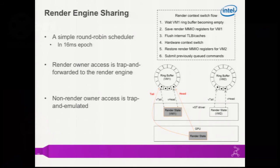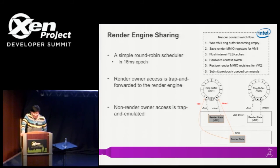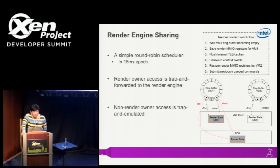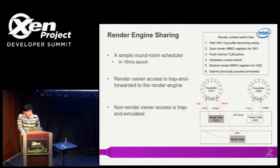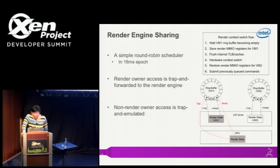For render engine sharing, the render engine is shared just like the CPU — at any given time, only one VM can be the render owner, meaning it can submit workloads directly to the hardware. We implemented a simple round-robin scheduler with a 60-millisecond epoch. The basic render context switch flow is: wait for VM1 to finish its work, save the MMIO registers for VM1, flush the internal TLB caches, issue a hardware context switch command, restore the MMIO registers from VM2's settings, and submit the queued workload.